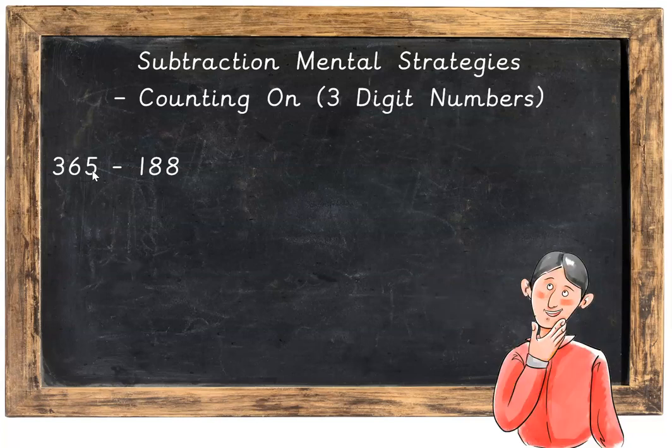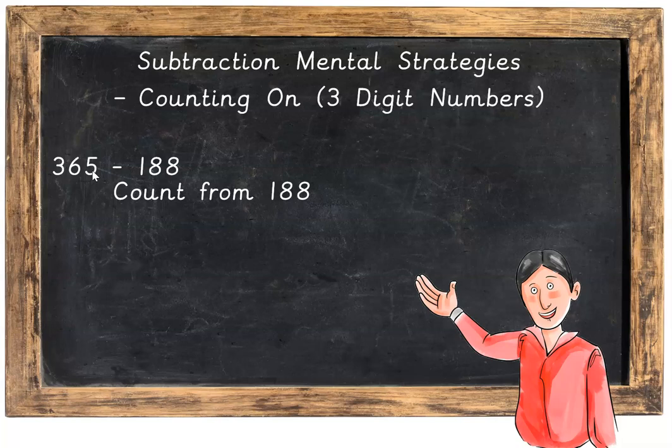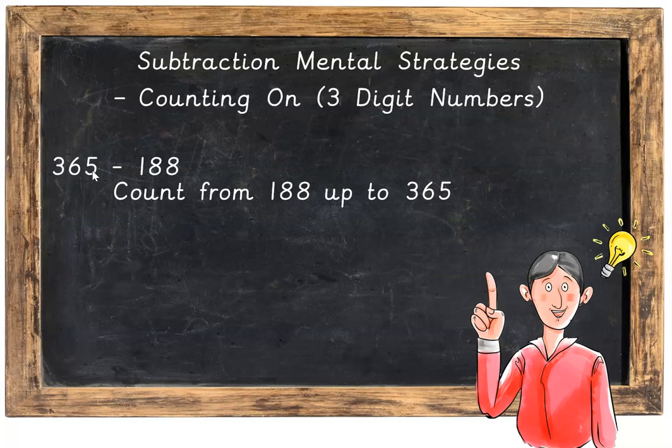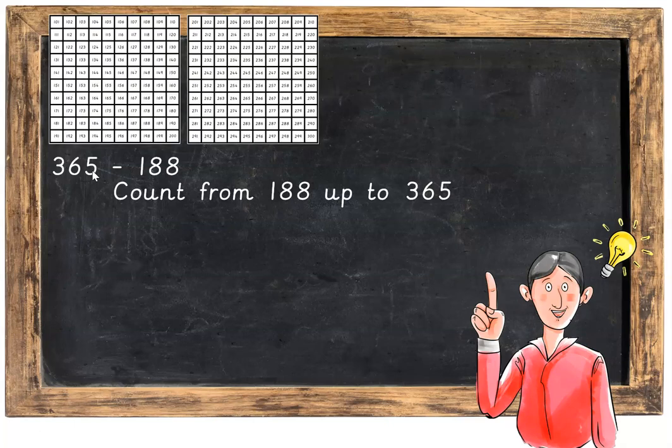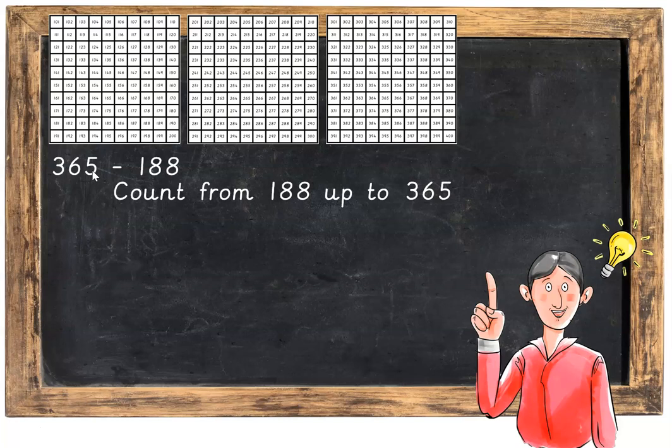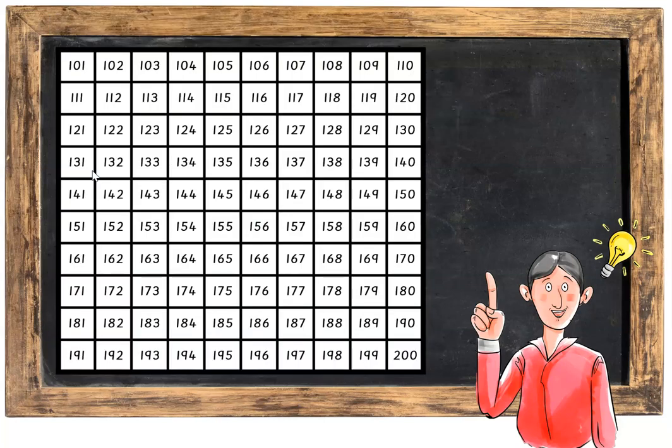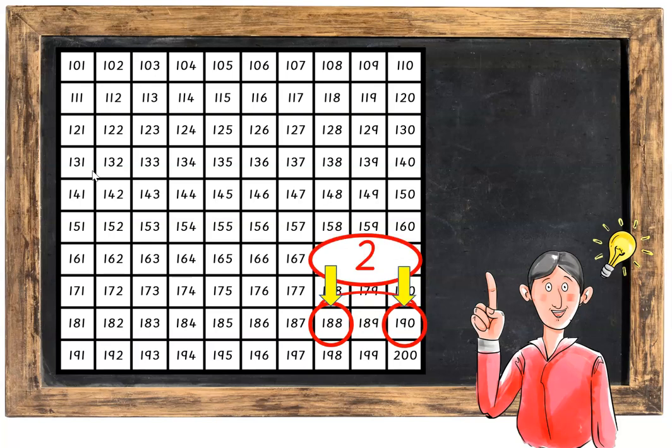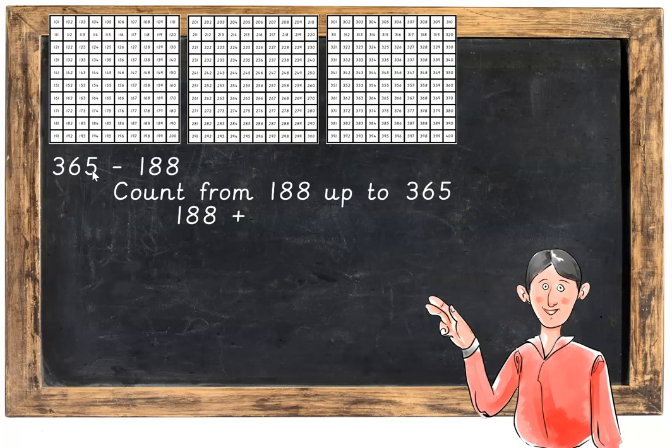OK, here's the solution. We're going to count from 188 up to 365. I'm also going to give you the 100 squares again to help us count. Starting on 188, the nearest number to jump to is 190, which is a jump of 1, 2. So 188 plus 2 is equal to 190.